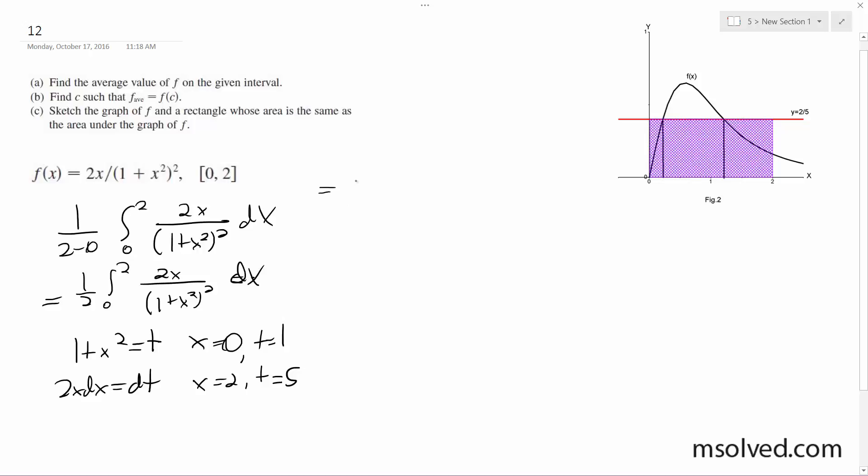So integrating this, we're going to have 1 half from 1 to 5 of t to the negative 2 dx.